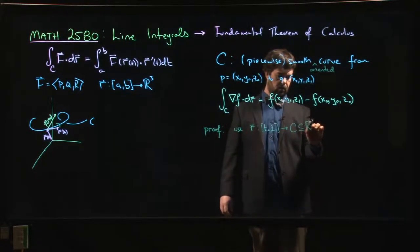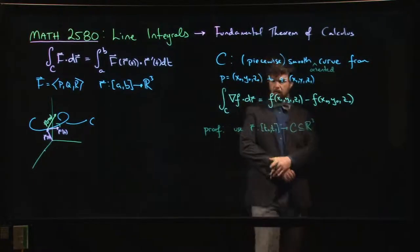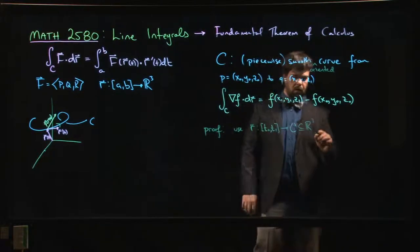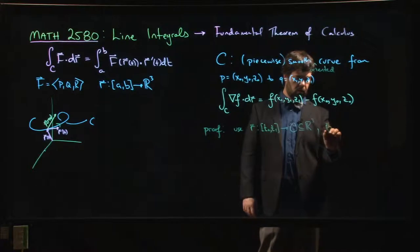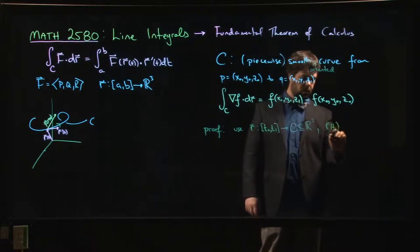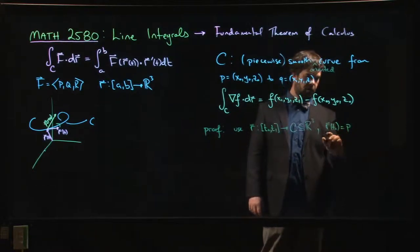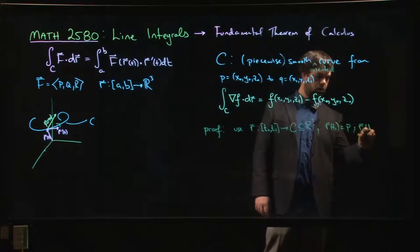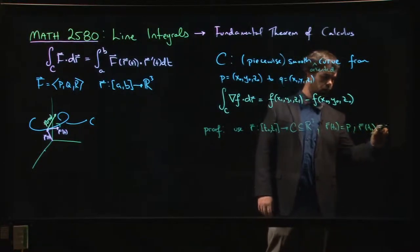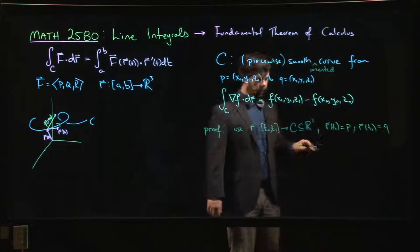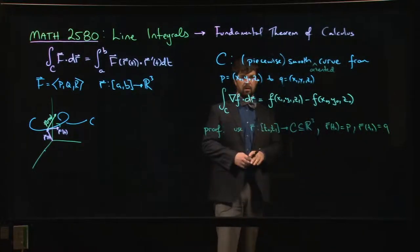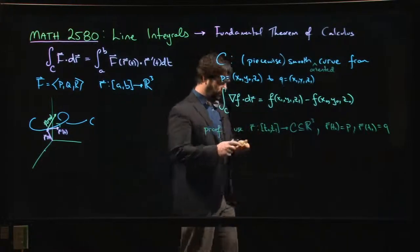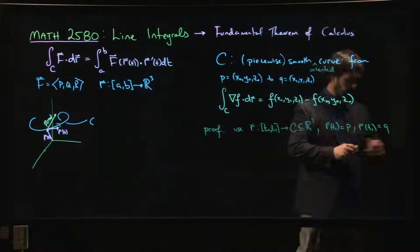And C is sitting inside of, well, R^3 in our example. So we've got our parameterization. We want r at t0 to be p, we want r at t1 to be q. We want it to match the orientation of our curve.